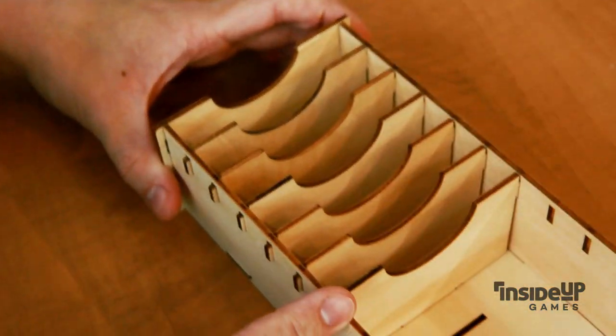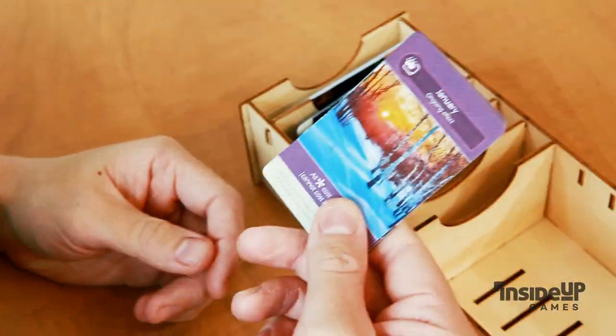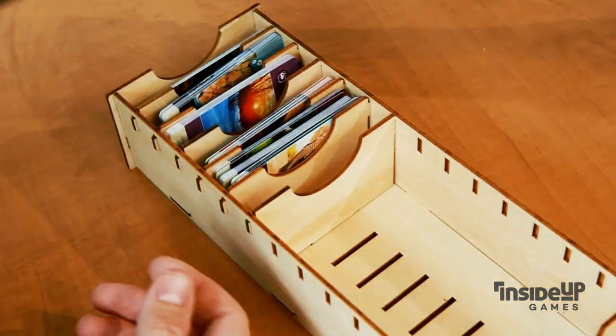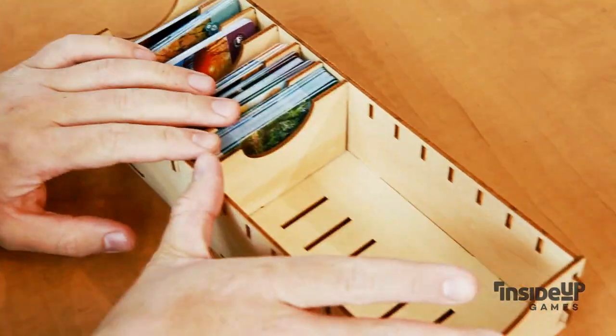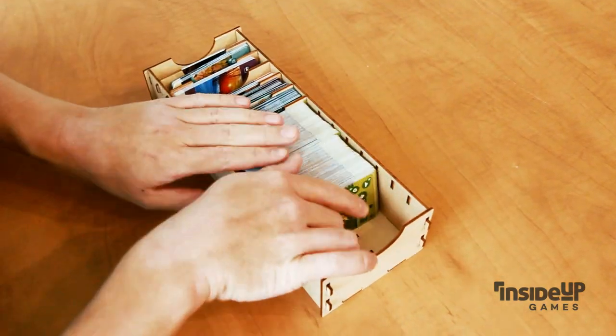The dividers organize each type of card: solo mode cards, island cards, Kickstarter exclusive calendar cards, climate and fauna cards. The ecosystem cards go in the last small slot, and the largest section of the tray will fit the remaining flora, terrain and event cards.